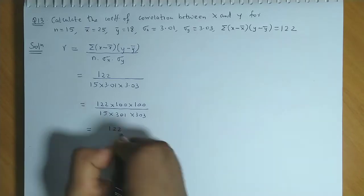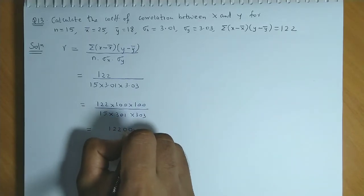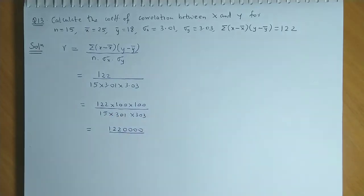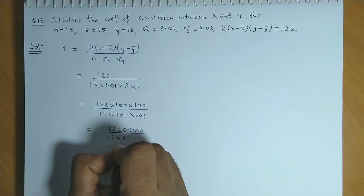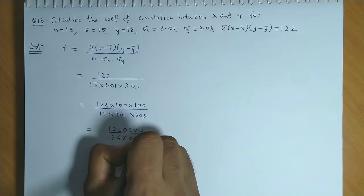In the numerator you have 1, 2, 2, 1, 2, 3, 4, 0s. And denominator it would be 15 times 3, 0, 1 times 3, 0, 3. So this product becomes 1, 3, 6, 8, 1, 3, 6, 8, 0, 4, 5.